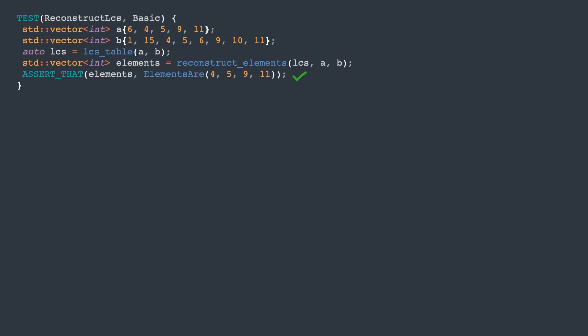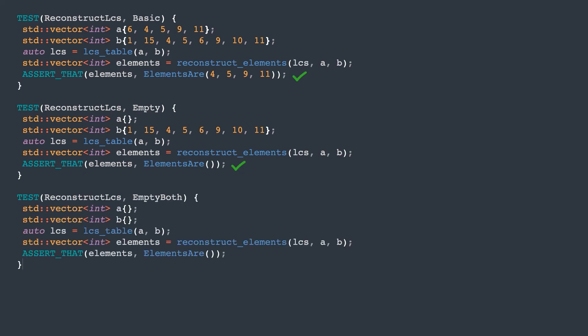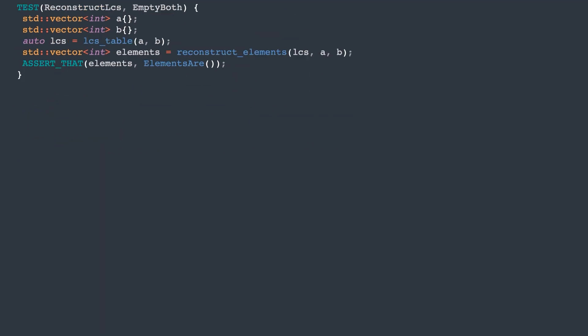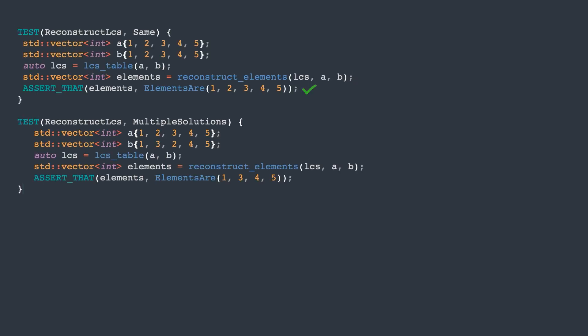This works for the basic case, when one of the sequences is empty, when both are empty, when they're both the same, and also when there are multiple solutions, showing that we keep the rightmost element from array A. Great, everything seems to work as expected.